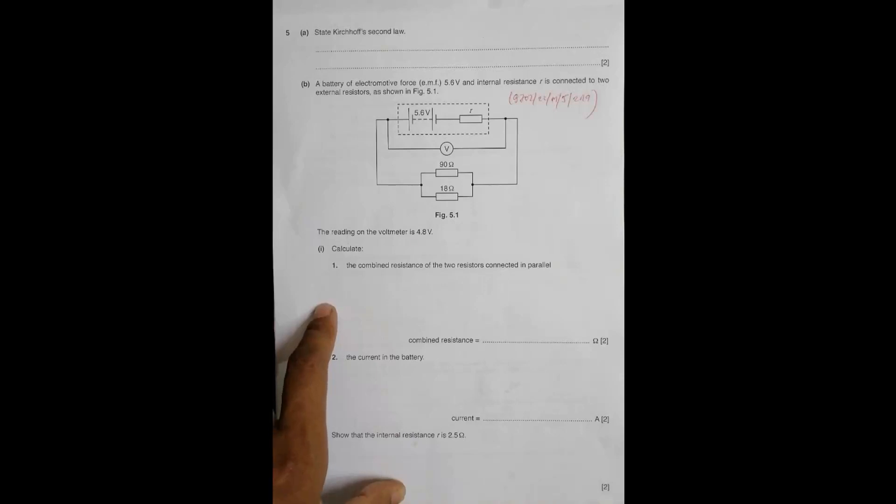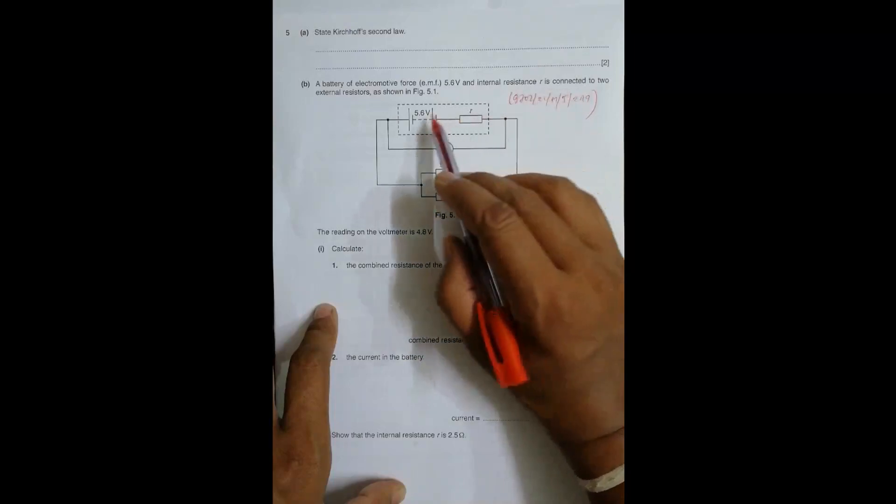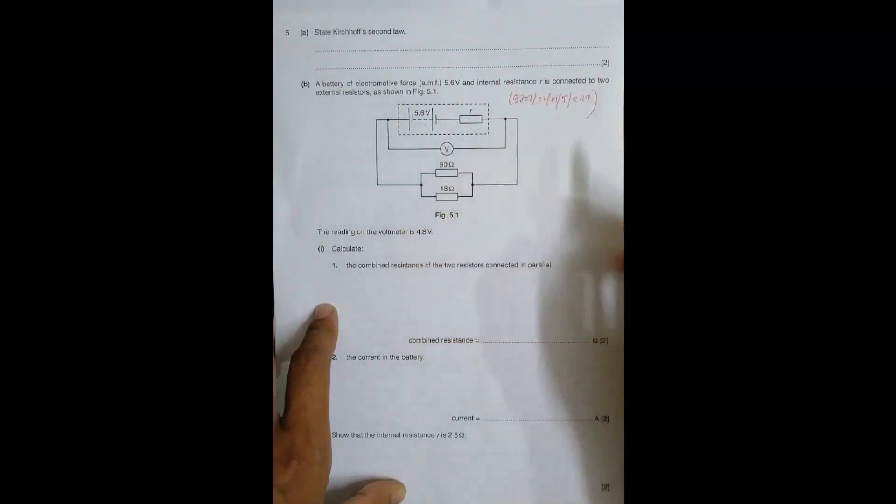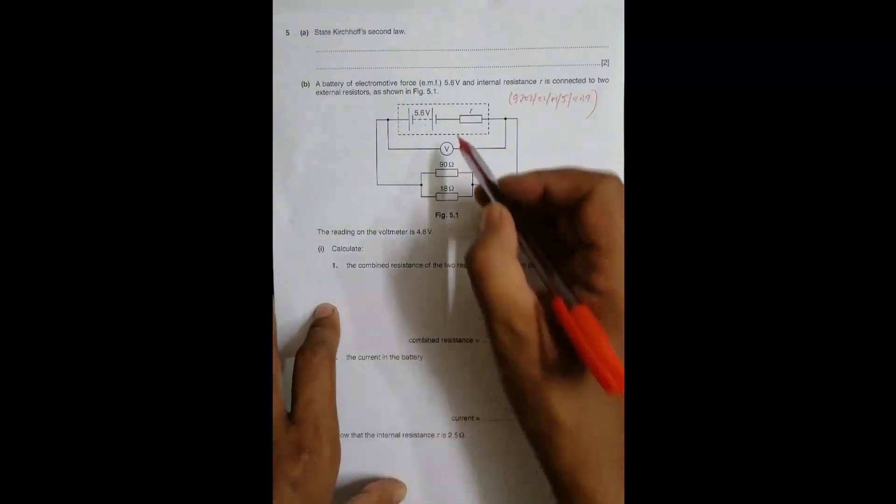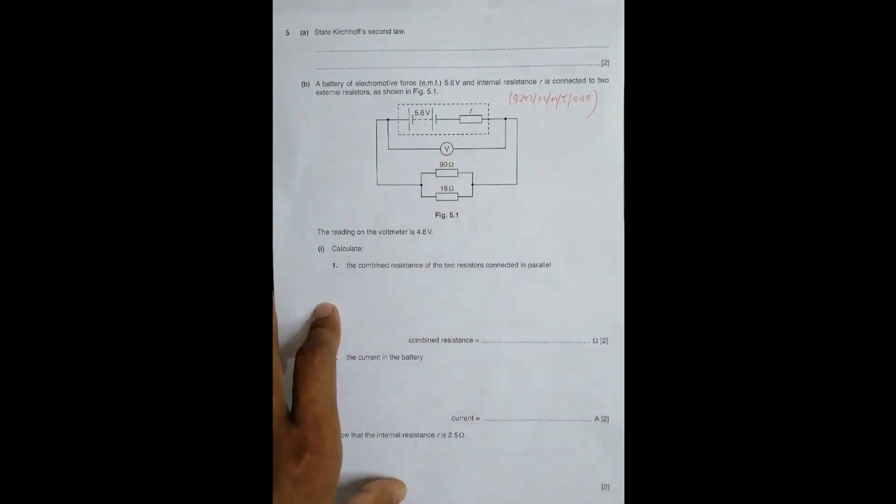Part B: A battery of electromotive force 5.6 volts and internal resistance r is connected to two external resistances in parallel as shown. The reading on the voltmeter is 4.8 volts, which means the external PD, or terminal PD, is equal to 4.8 volts.